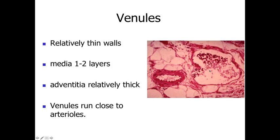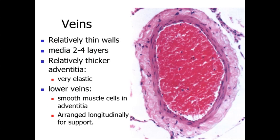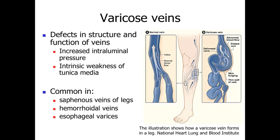The tunica adventitia of venules is relatively thick, especially in relationship to the tunica media. Venules run close to the arterioles. Veins are larger structures with the same basic characteristics — primarily only two to four layers of smooth muscle cells and a much thicker tunica adventitia. In some of the lower veins, smooth muscle cells can be arranged longitudinally in the tunica adventitia for support. If this support is disrupted, we can have varicose veins, where weakening causes blood to pool down within the veins.